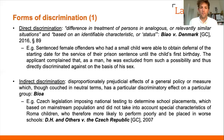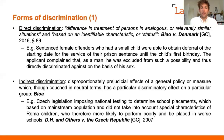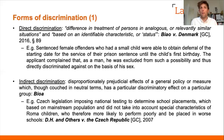Indirect discrimination is where a measure that purports to be neutral and treat everyone the same actually has a disproportionate prejudicial effect on one particular group. An example from the Czech Republic: legislation imposed national testing, similar to the eleven-plus, to determine school placements. The scoring was based on the mainstream population and did not account for special characteristics of Roma children related to their upbringing. As a result, they were particularly likely to perform poorly and be placed in worse schools, amounting to indirect discrimination.